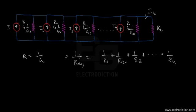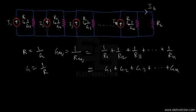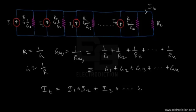So G_equivalent equals G1 plus G2 plus G3. Keeping that in mind, the total current would be equal to I1 plus I2 plus I3 and continuing till IN. Now, if we're trying to reduce this network, we should take into account these two equations — the equivalent conductance for the circuit and the total equivalent current that's supposed to flow — as the important turning points of our session.